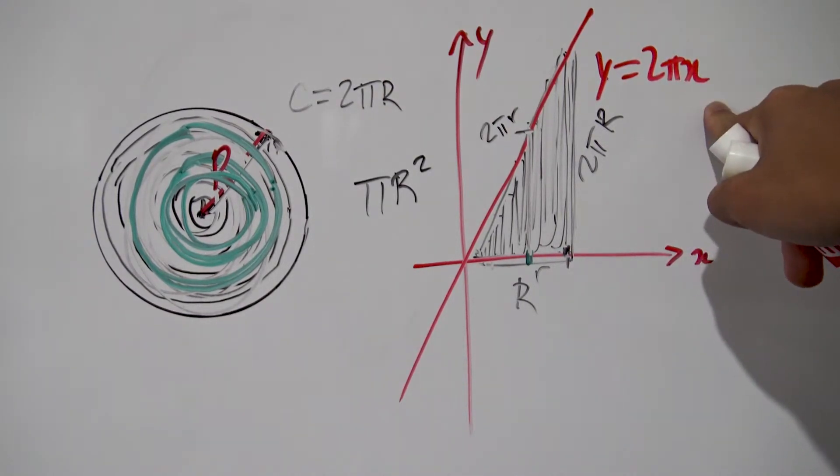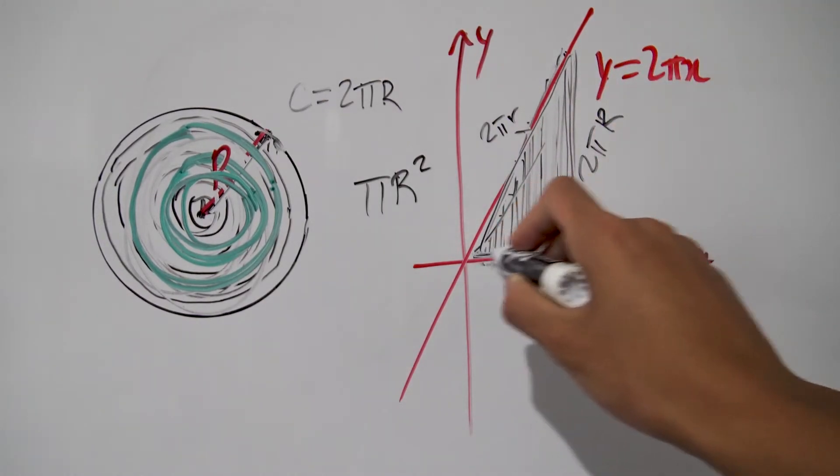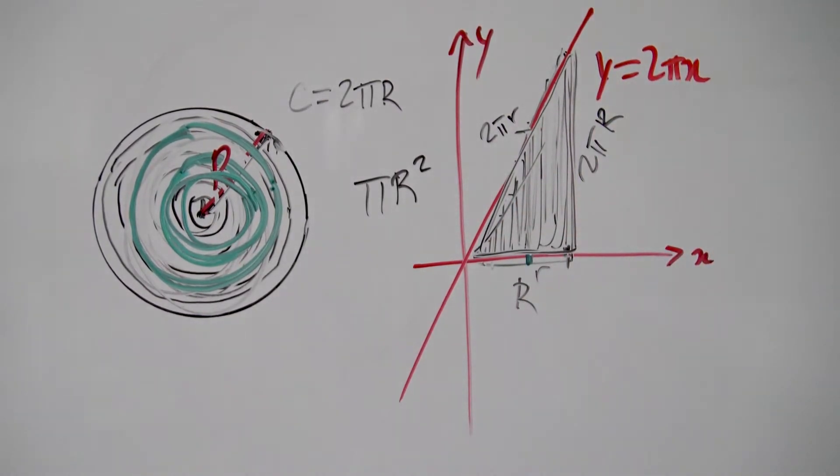And you see this is exactly a straight line, a linear relation, and that's why this whole block of black marker here is exactly a triangle.